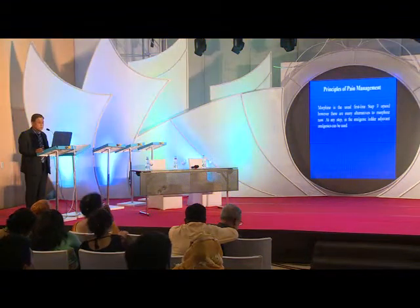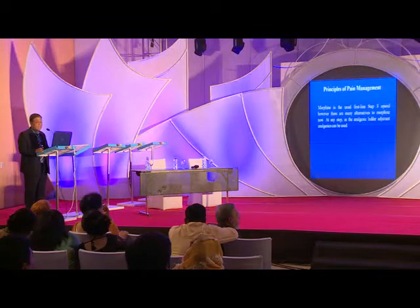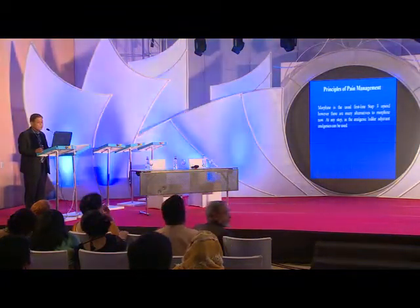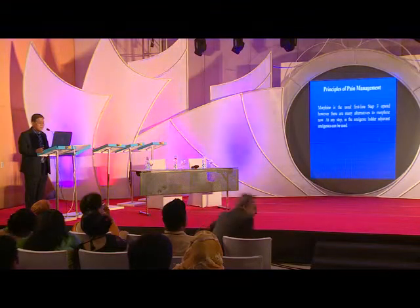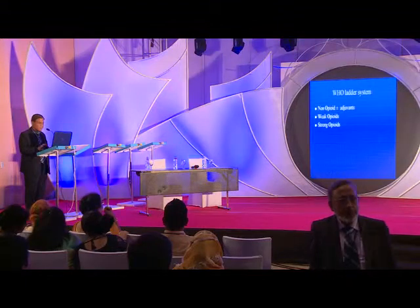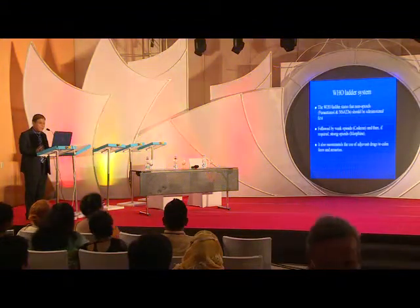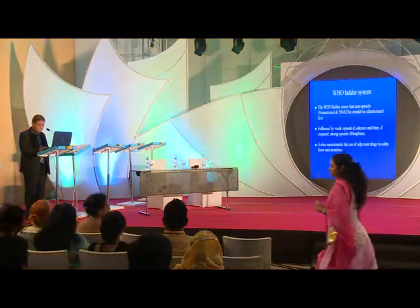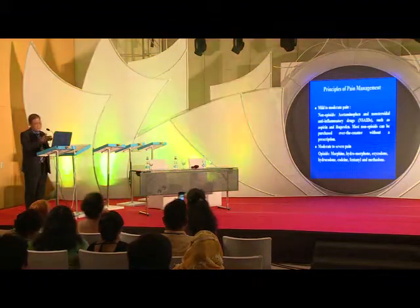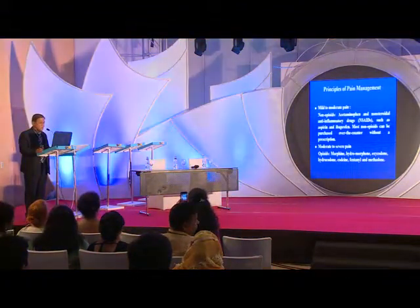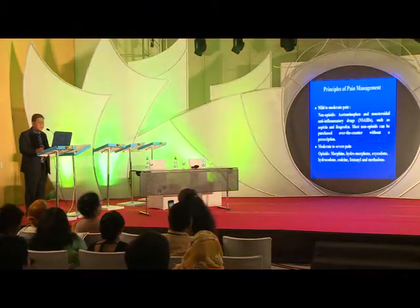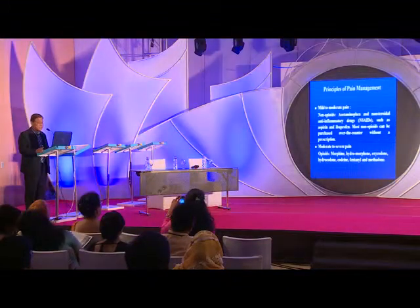Morphine is the most useful first-line step 3 opioid. However, there are many alternatives to morphine now. At any step in the analgesic ladder arrangement, analgesics can be used. For mild pain, non-opioid drugs like acetaminophen and non-steroidal anti-inflammatory drugs are used.